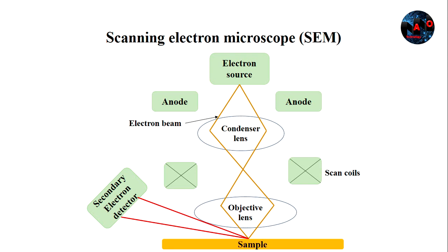A highly concentrated electron beam is shot from an electron gun located at the device's top. The two main electron gun types are field emission guns, which generate a strong electric field that releases electrons from the atom, and thermionic guns, in which the filament is heated until the electrons stream away.